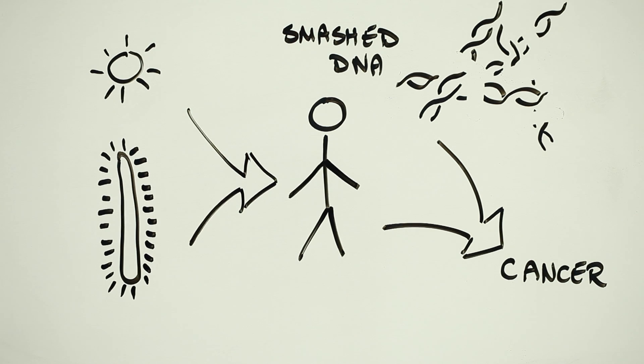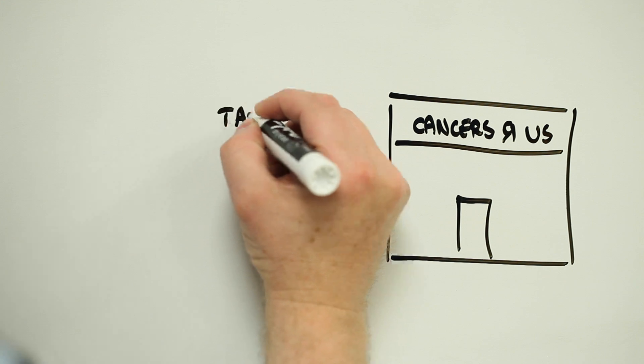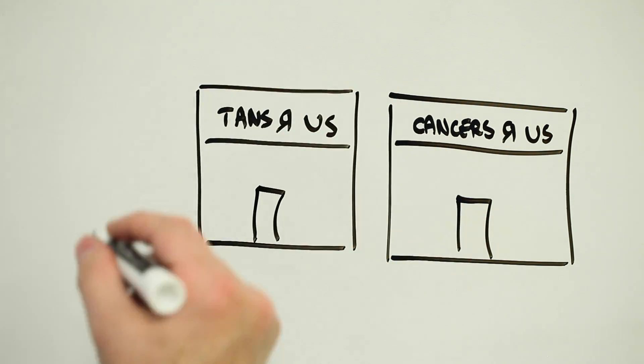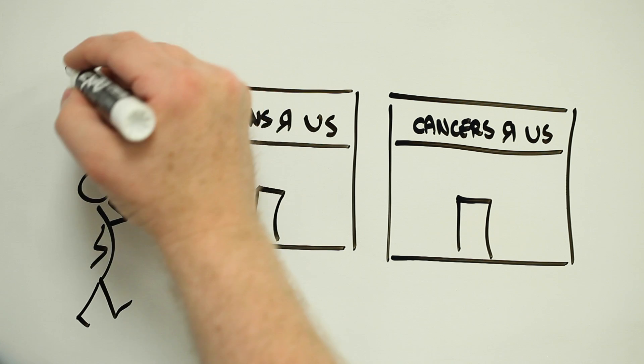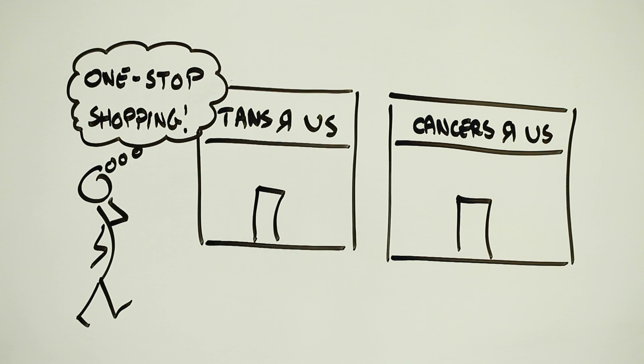Each year approximately 5 million people are treated for skin cancer in the US alone. Not all of this is a result of using tanning beds, of course, although it has been estimated that over 400,000 cases of skin cancer each year in the United States are associated with artificial tanning.